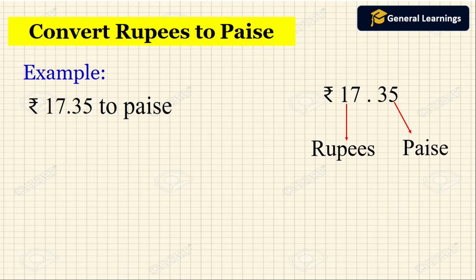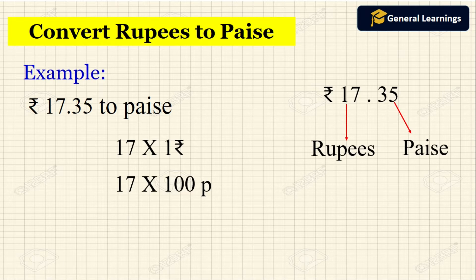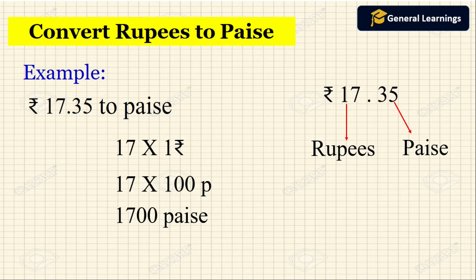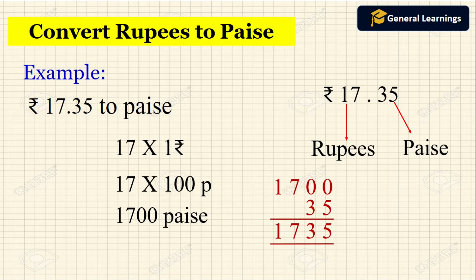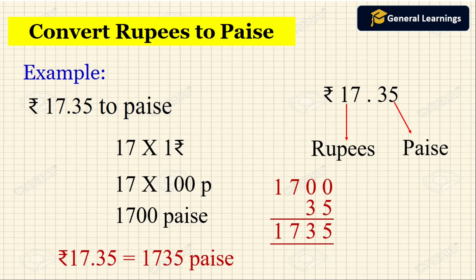First we need to convert the rupees to paise. Here we have 17 rupees, written as 17 into 1 rupee. Since 1 rupee equals 100 paise, 17 into 100 gives us 1700 paise. The question also gives 35 paise. Adding 35 paise to 1700 paise, we get 1735 paise.